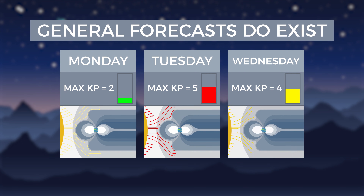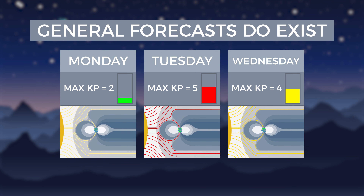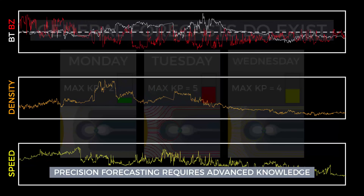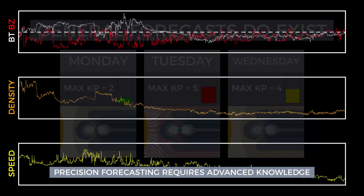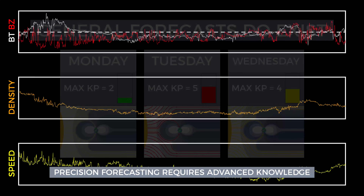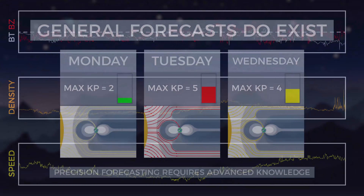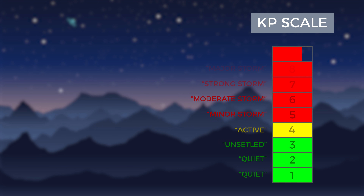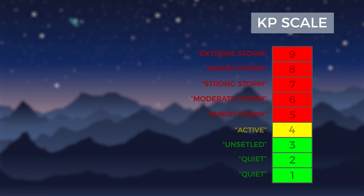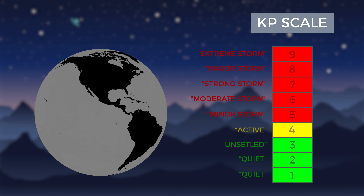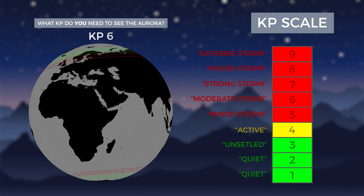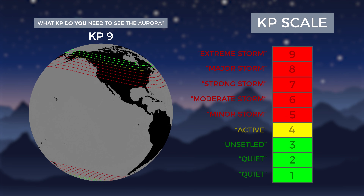Besides a general forecast, predicting the aurora down to the hour or minute is hard to do without advanced knowledge of solar wind data and trends. If you do see an aurora forecast, look for the Kp measurement, which is the scale used to roughly measure the geomagnetic activity of our planet. Higher Kp numbers correlate with more intense aurora and greater expansion of the aurora ovals, so knowing what Kp you need to see aurora at your location will help you decide when a good time is to head out and photograph the lights.